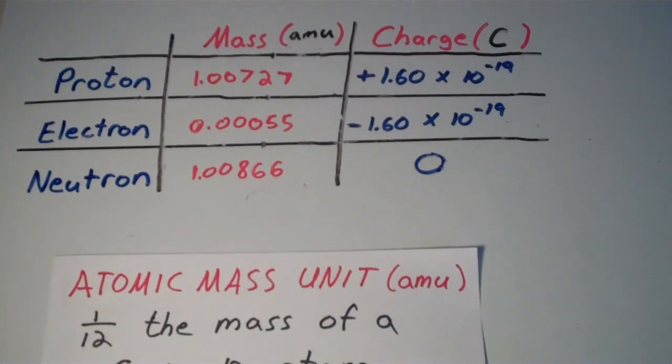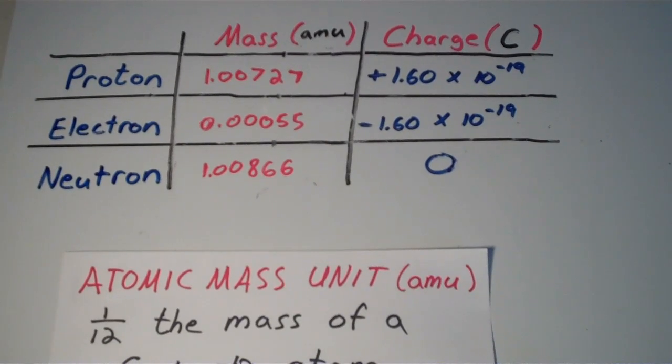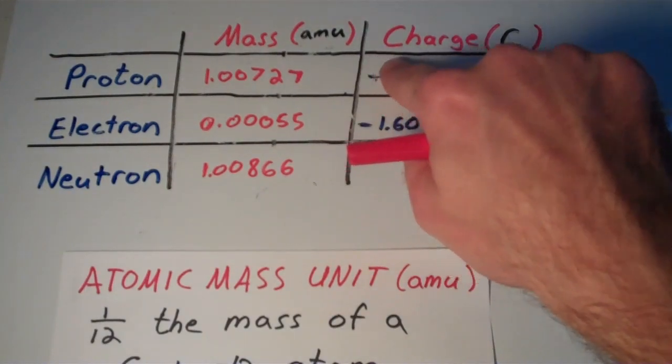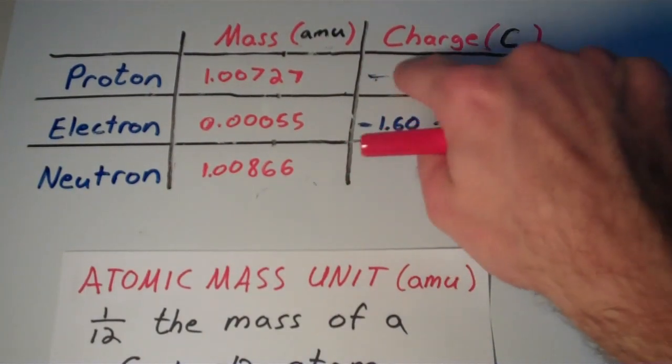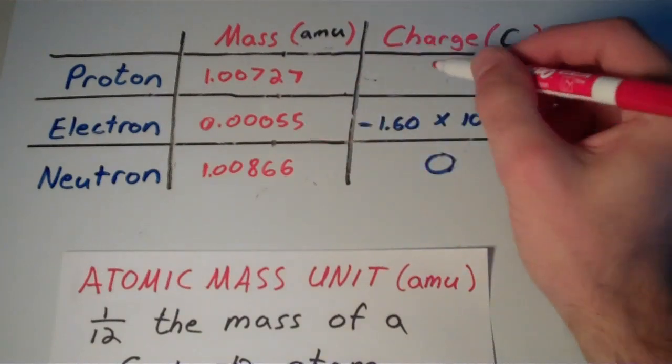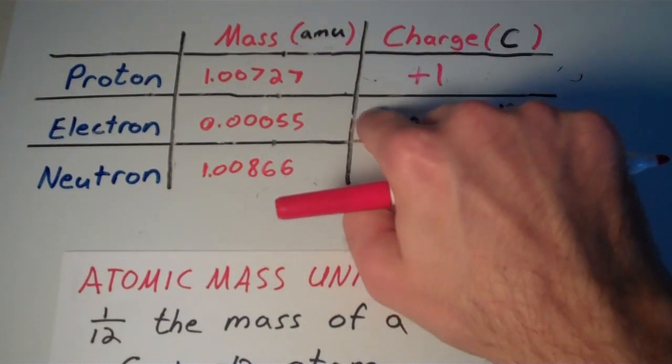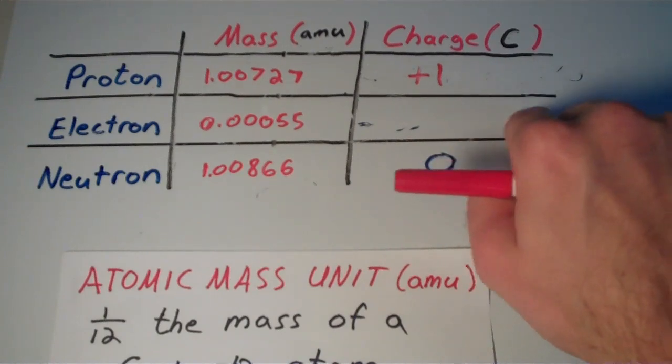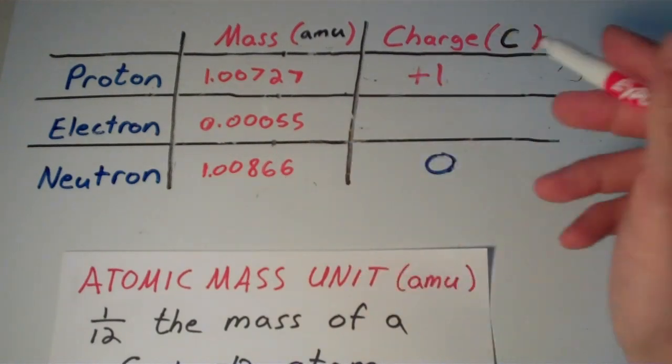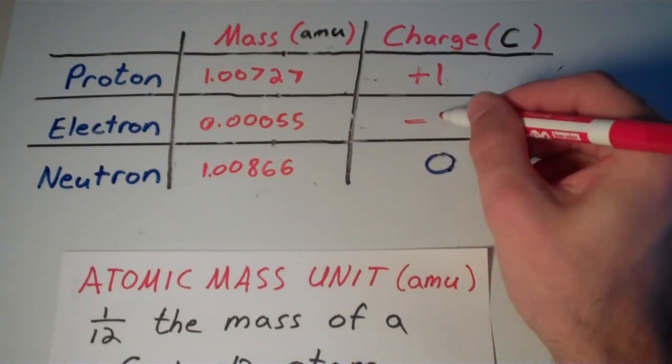And now we have charge. We say that the charge of a proton is 1.60 times 10 to the negative 19 coulombs. That's a little long-winded as well. So let's try to express these in terms of relative charge. And the way that we do this is just by simply saying that the proton has a charge of plus 1 and that the electron has a charge of minus 1.